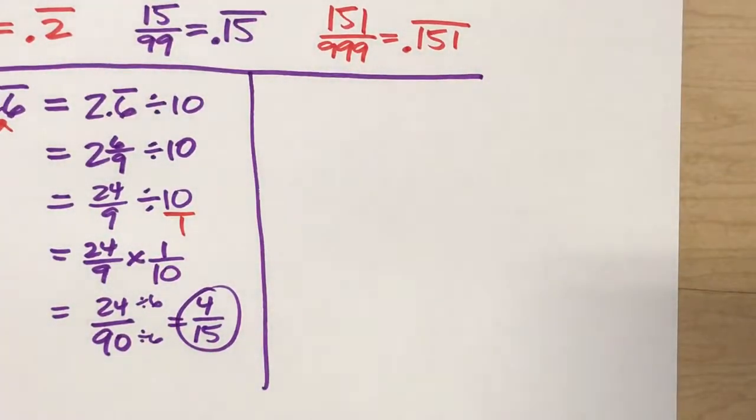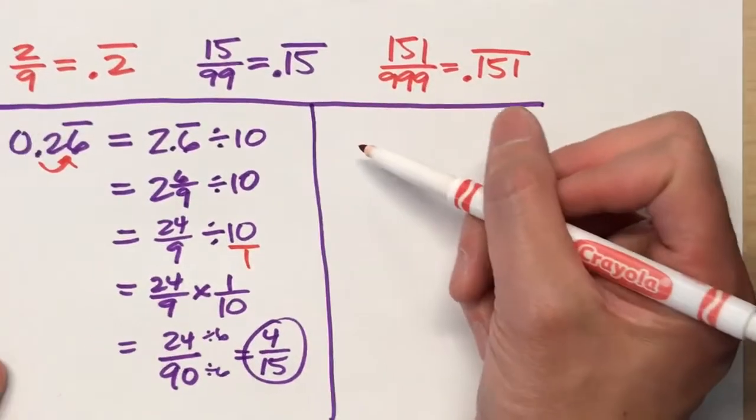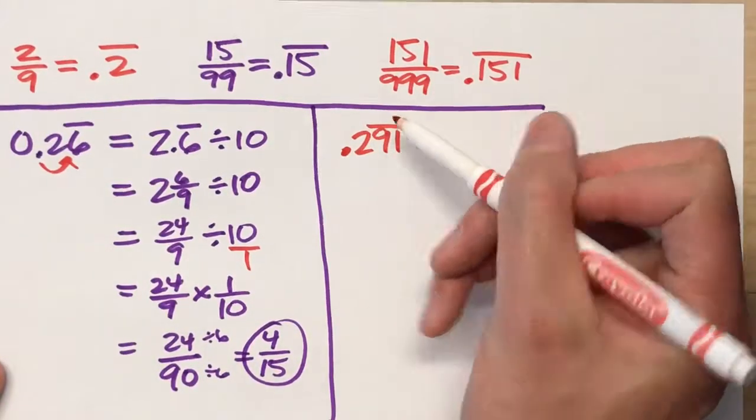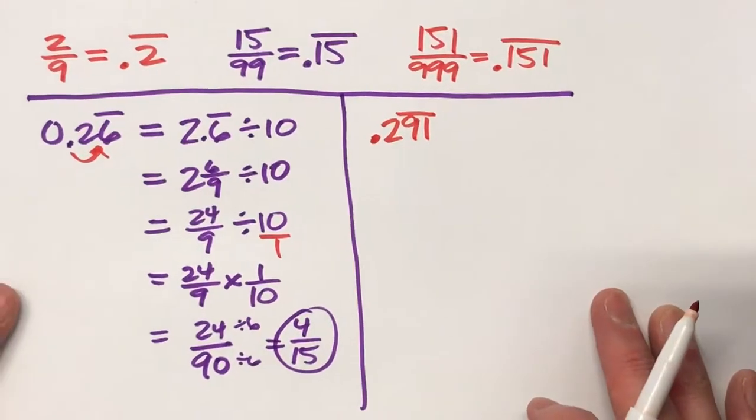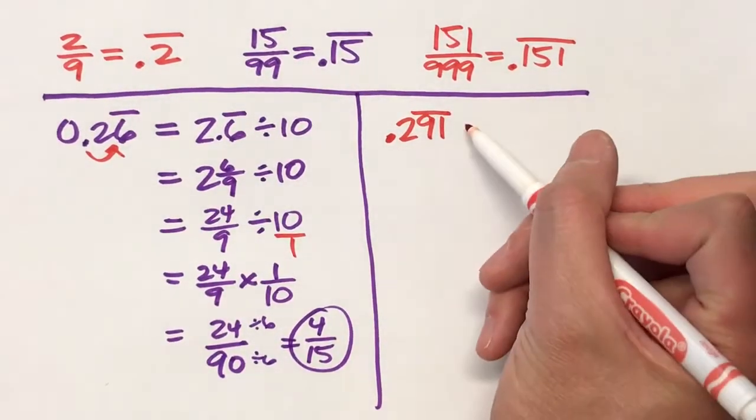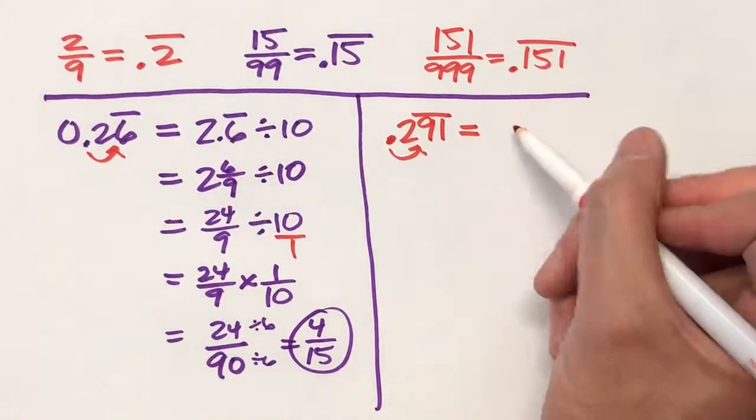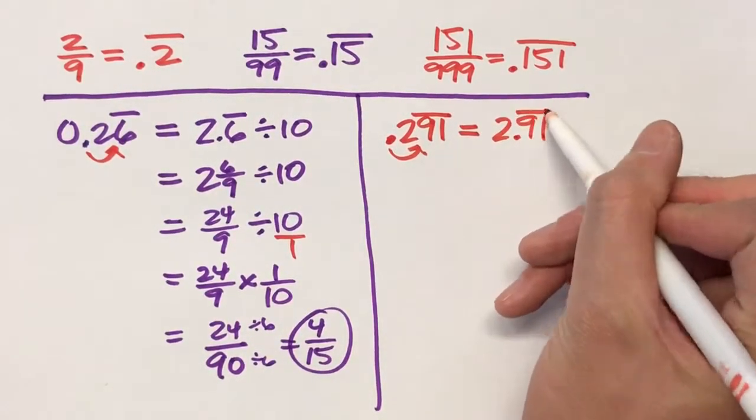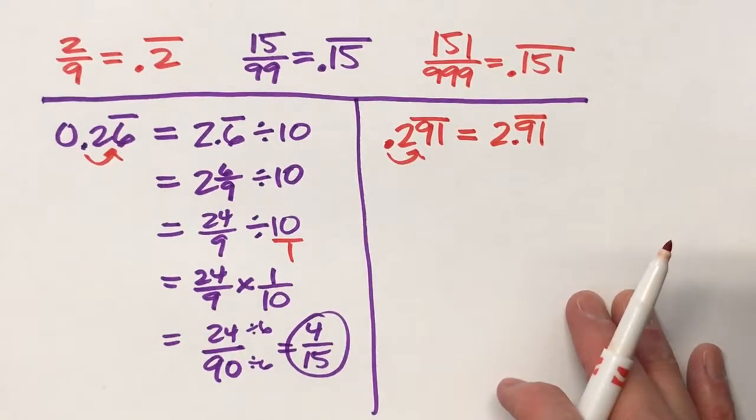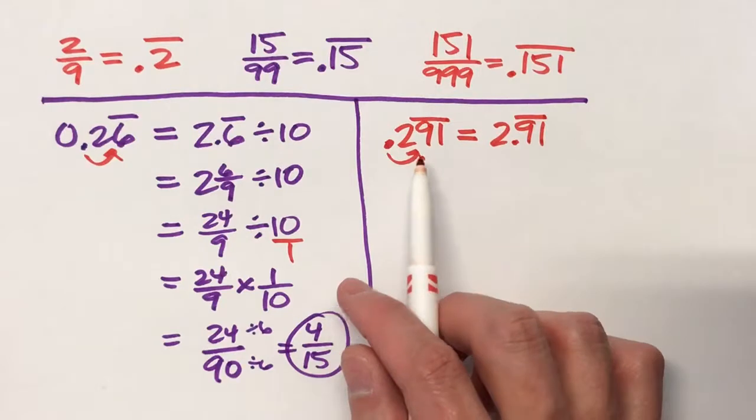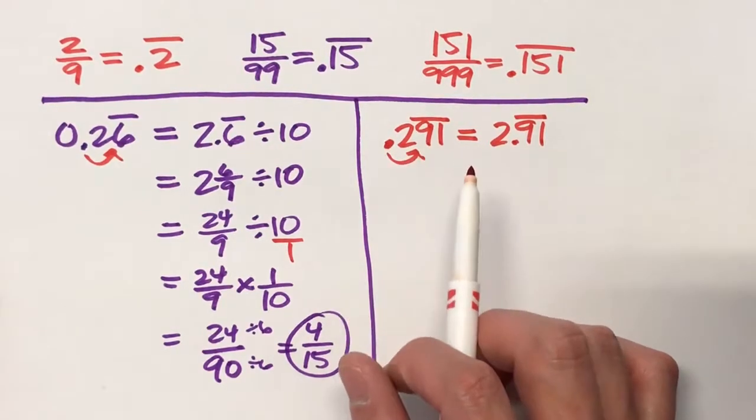This time, slightly harder one here, 0.291 where just the 9 and the 1 are repeating. So, imagine moving that decimal over one place. Then it'd be a lot easier to work with 2.91 repeating. So this we could easily convert into a fraction. The original one we couldn't because the 2 isn't repeating.